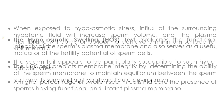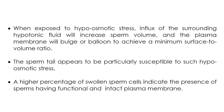When exposed to hypoosmotic stress, water and small molecular weight compounds will attempt to enter into the sperm to reach osmotic equilibrium. This influx of surrounding hypotonic fluid increases sperm volume, and the plasma membrane will bulge or balloon to achieve a minimum surface-to-volume ratio. The sperm tail is particularly susceptible to such hypoosmotic stress, and based on the vigor of the sperm cells, different patterns of tail swelling are observed.